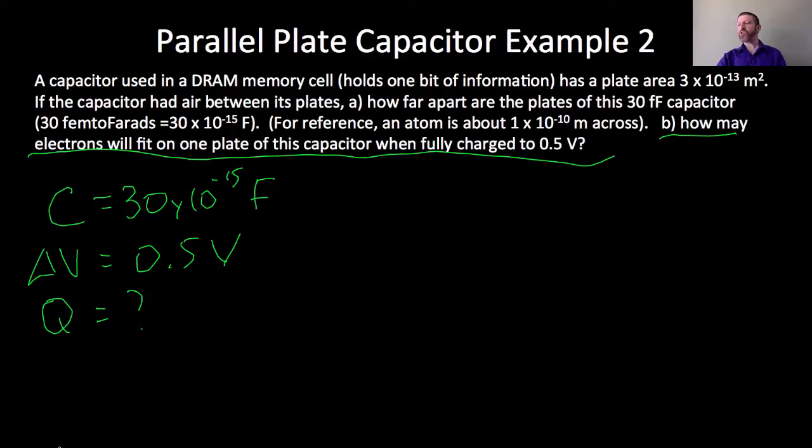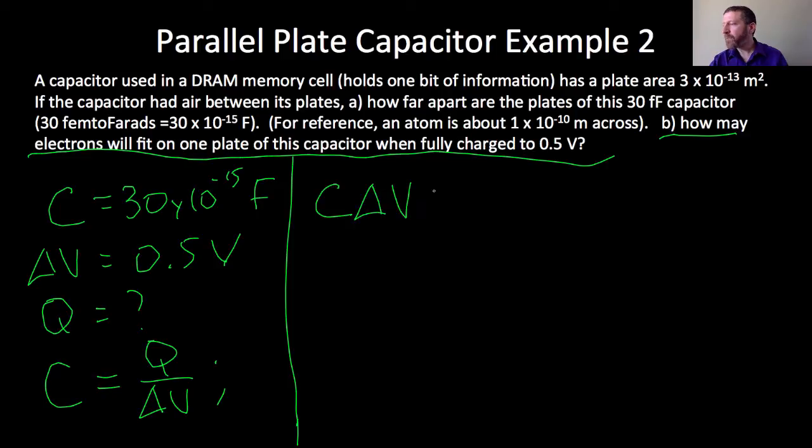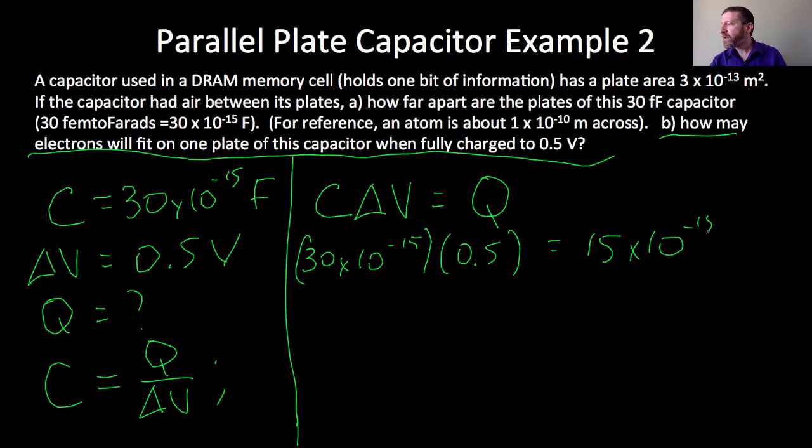So for this, I just go back to my definition of capacitance. Caps are quite overvalued. Solve for Q and you get C delta V equals Q. So that's going to be 30 times 10 to the negative 15 times the voltage difference, 0.5. And that gives me 15 times 10 to the negative 15. But what are the units on that? The units are coulombs, the standard SI unit of charge.